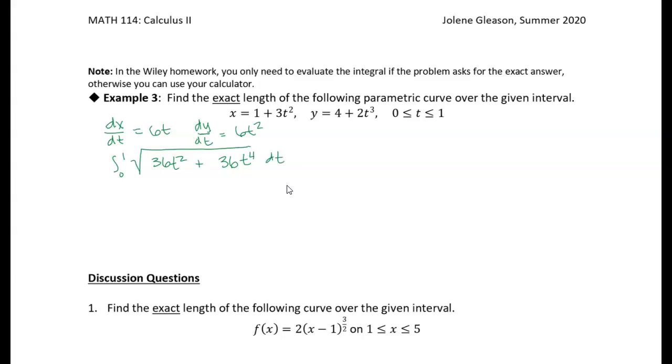Now, notice we can actually, we have 36, which is a perfect square, and then we have t squared, which is a perfect square. So we can actually pull the 36t squared out, so we can factor one of those out, because both of these terms have a factor of 36 and they both have a factor of t squared. So I'm going to rewrite this as 6t, right? The square root of 36t squared is 6t, and then what I have left in the integral is 1 plus t squared.